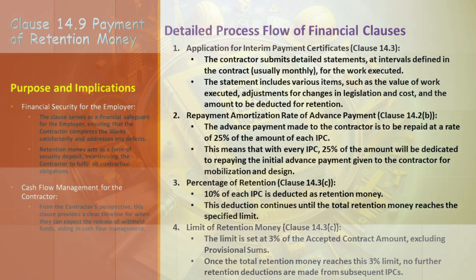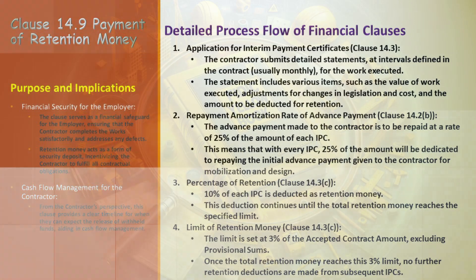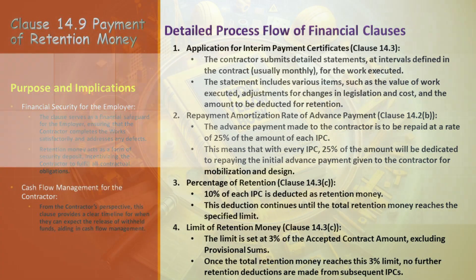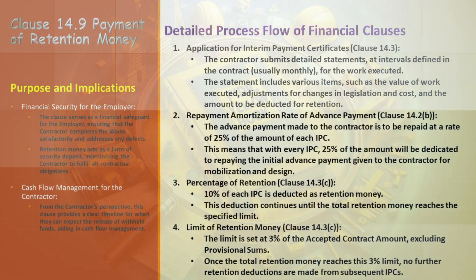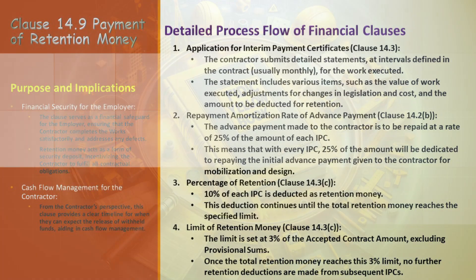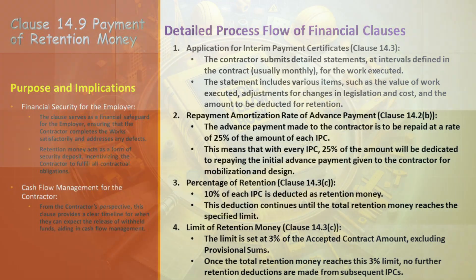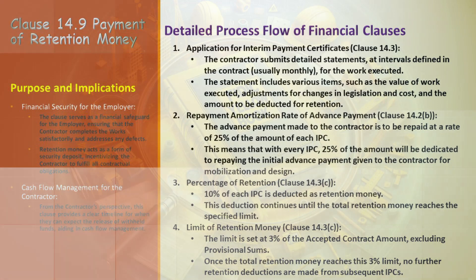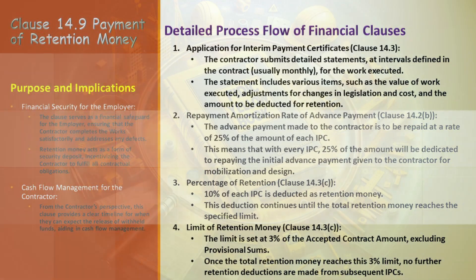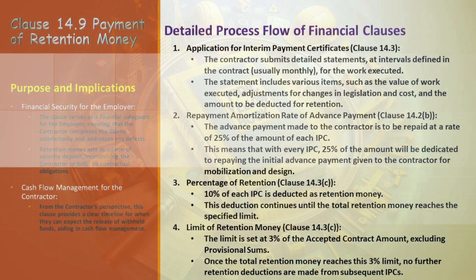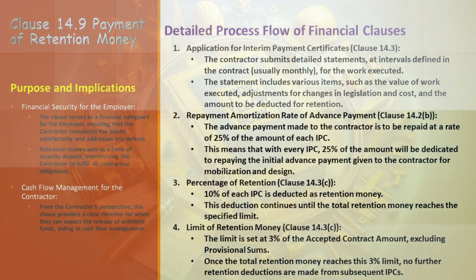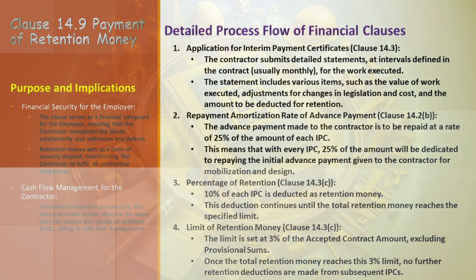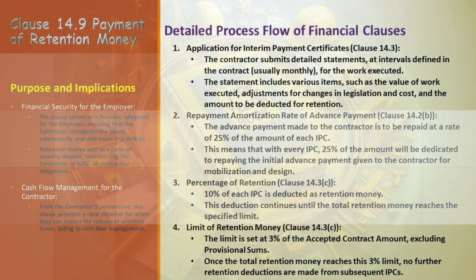Clause 14.3.C — Percentage of Retention: a standard 10% of each IPC is set aside as retention money, accumulating over time. This retention acts as a security measure, ensuring the contractor addresses any defects or completes the work satisfactorily. The total retention money is limited to 3% of the accepted contract amount, not including provisional sums. Once this cap is reached, subsequent IPCs are free from retention deductions, marking a significant financial milestone in the contract execution.